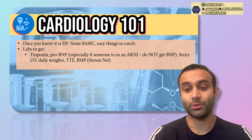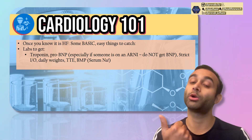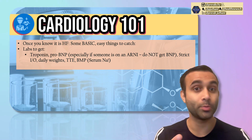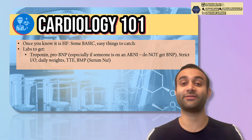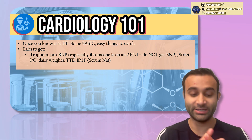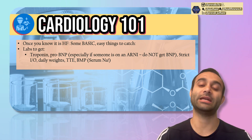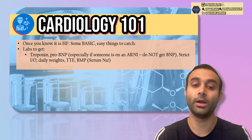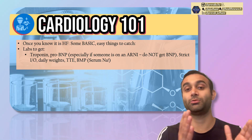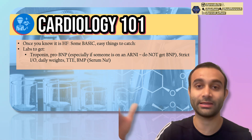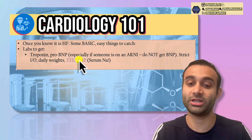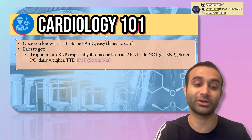Once you know it's heart failure, get basic labs: a troponin to rule out an underlying heart attack, and an NT-proBNP — not a true BNP, because if someone is taking a neprilysin inhibitor it can falsely elevate BNP. NT-proBNP is released when the atrial walls are stretched, signaling potential heart failure exacerbation. Get strict ins and outs, daily weights to track fluid removal, a repeat echo, and check serum sodium — because a low sodium is often a bad prognostic sign.